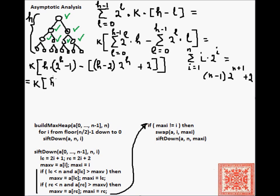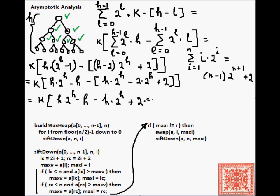We get k times h times 2 to the h, minus h. And, here we have h times 2 to the h, minus 2 times 2 to the h, plus 2. Multiplying it all out, it's h times 2 to the h, minus h, minus h times 2 to the h, plus 2 times 2 to the h, minus 2.